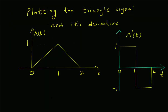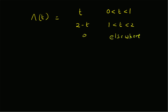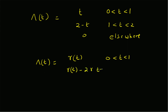Based on the definition of the triangle function and this graph, we can define the triangle function as follows: triangle of t equals t (a ramp with positive slope one) within the interval zero to one, and it equals two minus t within the interval one to two, and zero elsewhere. We can also represent this triangle function in terms of ramp signals as: r(t) for zero to one, and r(t) minus two times r(t minus one) for one to two, and zero elsewhere.